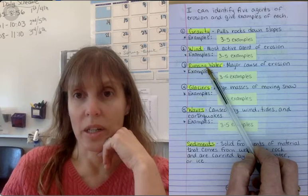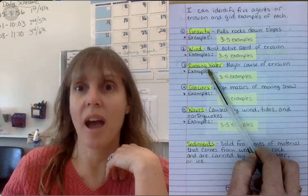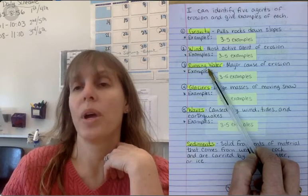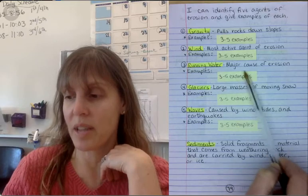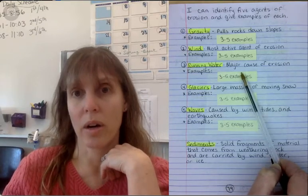Running water. This is a major cause of erosion. You know this because when flooding happens and when the rivers go up, we get all kinds of gullies and rills and all kinds of things here in Michigan. So three to five examples of running water erosion. River might be one of them.